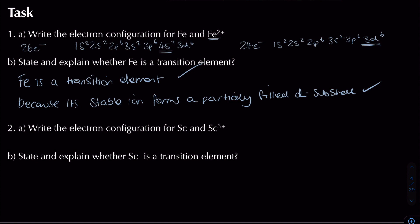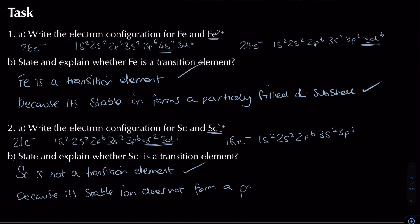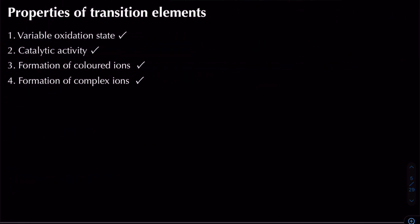For scandium (21 electrons): 1s2 2s2 2p6 3s2 3p6 4s2 3d1. Forming Sc3+ removes three electrons, leaving 18 electrons: 1s2 2s2 2p6 3s2 3p6 — with an empty 3d subshell. Scandium is not a transition element because its stable ion does not have a partially filled d subshell.